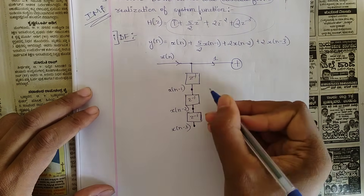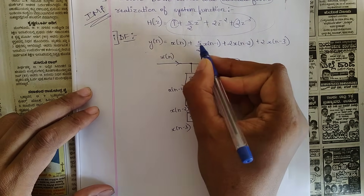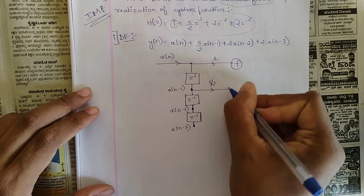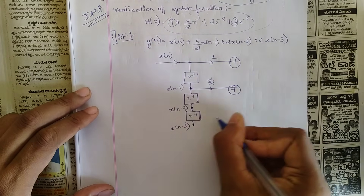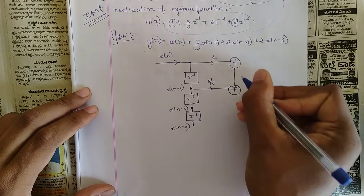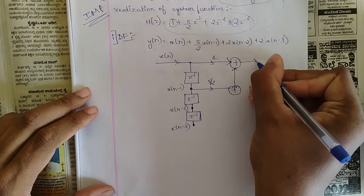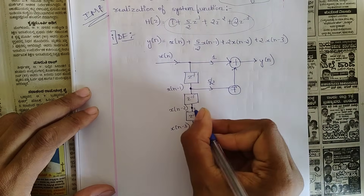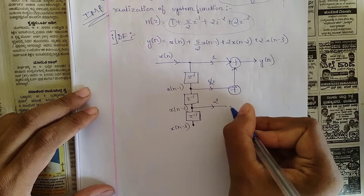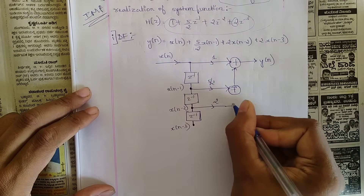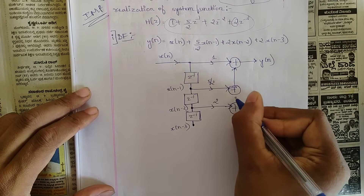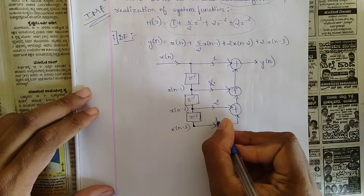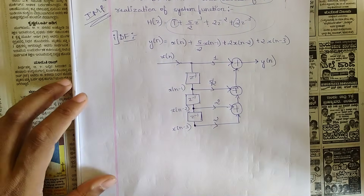From the first tap the coefficient is 5/2, which gets summed up. We need one more summer and one more delay. From the next point the coefficient is 2, then another summer, and again the coefficient is 2. This gives us the final direct form structure.